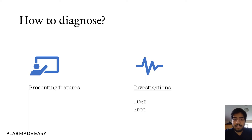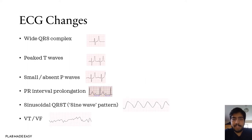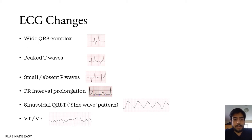You can see the following ECG changes with hyperkalemia: wide QRS complexes, peaked T waves, small or absent P waves, PR interval prolongation, a sine wave pattern, ventricular tachycardia, or V-fib.